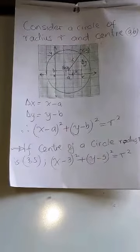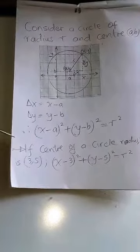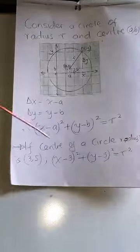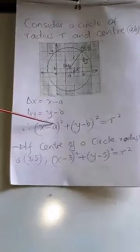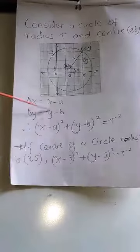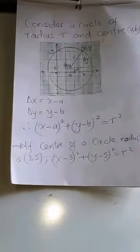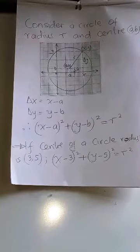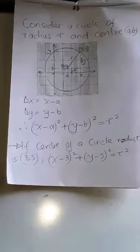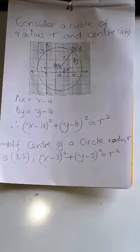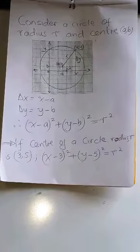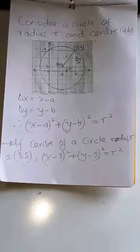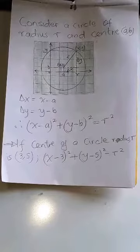So for example, if the center of a circle of radius r is (3, 5), you substitute 3 for a and 5 for b. This is the general equation of a circle centered at (a, b). The approach is to apply the Pythagorean theorem by determining the x and y displacements, with r as the hypotenuse.